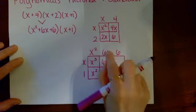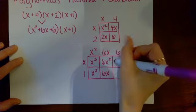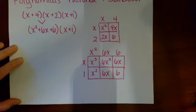x times six x is six x squared. Six x times one will be six x. x times six is six x. And six times one is six.